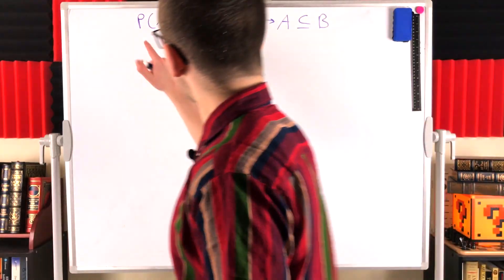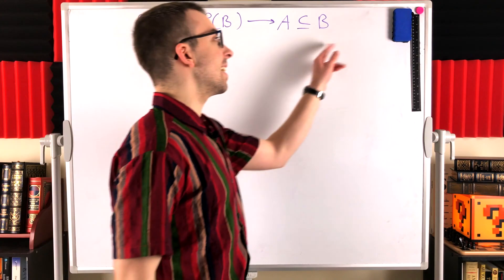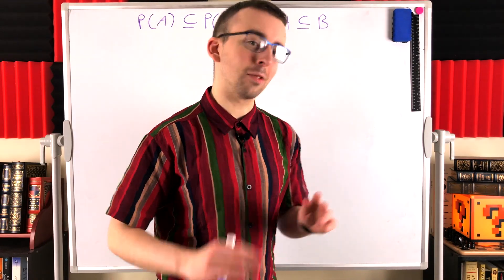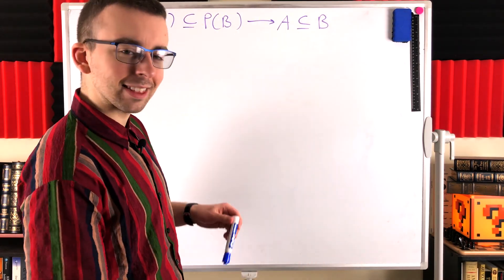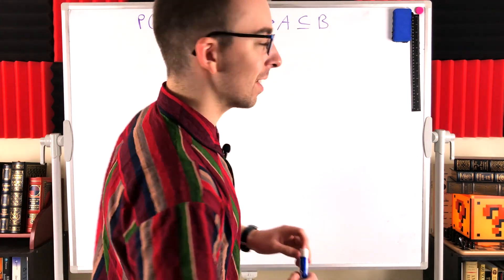The proof that if the power set of A is a subset of the power set of B, then A is a subset of B. So that's what we'll be proving in today's Wrath of Math lesson. Always appreciate those viewer requests, so be sure to leave yours down in the comments.